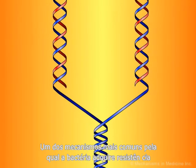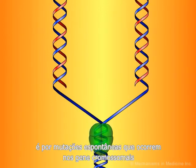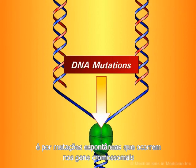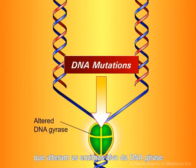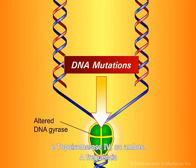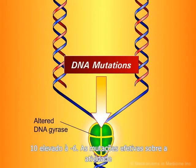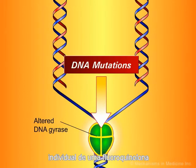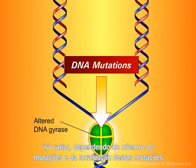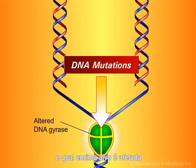One of the most common mechanisms by which bacteria acquire resistance to fluoroquinolones is by spontaneously occurring mutations in chromosomal genes that alter the target enzymes, DNA gyrase and topoisomerase 4, or both. The frequency with which spontaneous mutations occur may be in the range of 10 to the power of negative 6. The effect of mutations on the activity of an individual fluoroquinolone will vary depending on the number of mutations, the location of the mutations, and which target enzyme is affected.